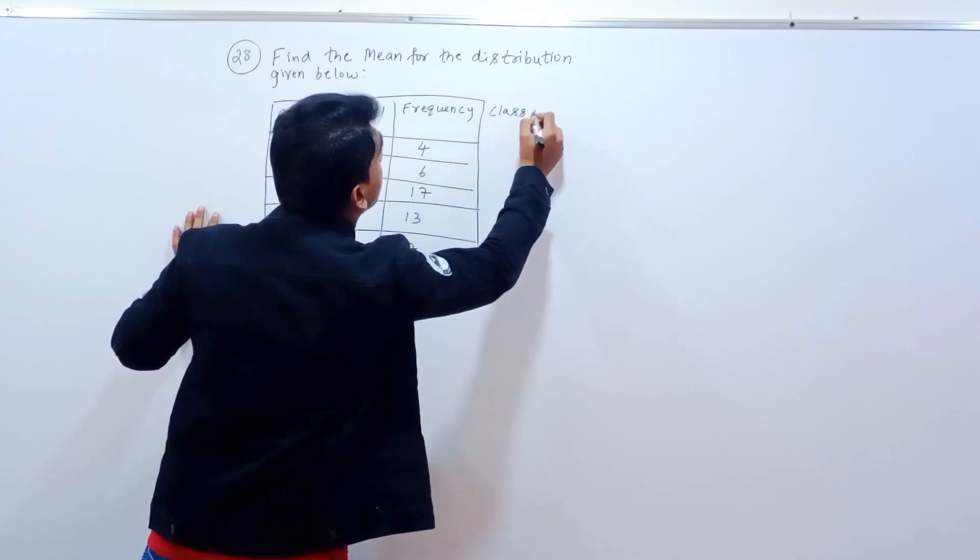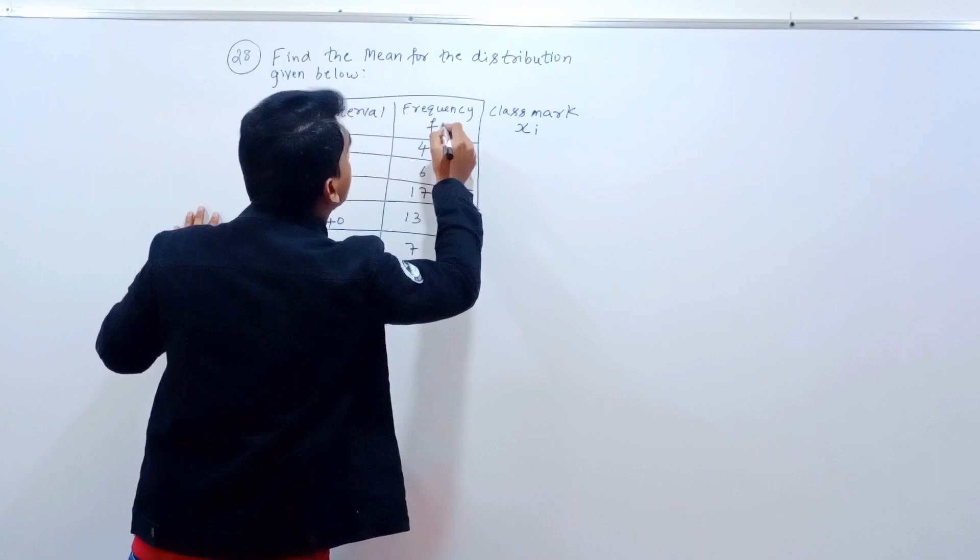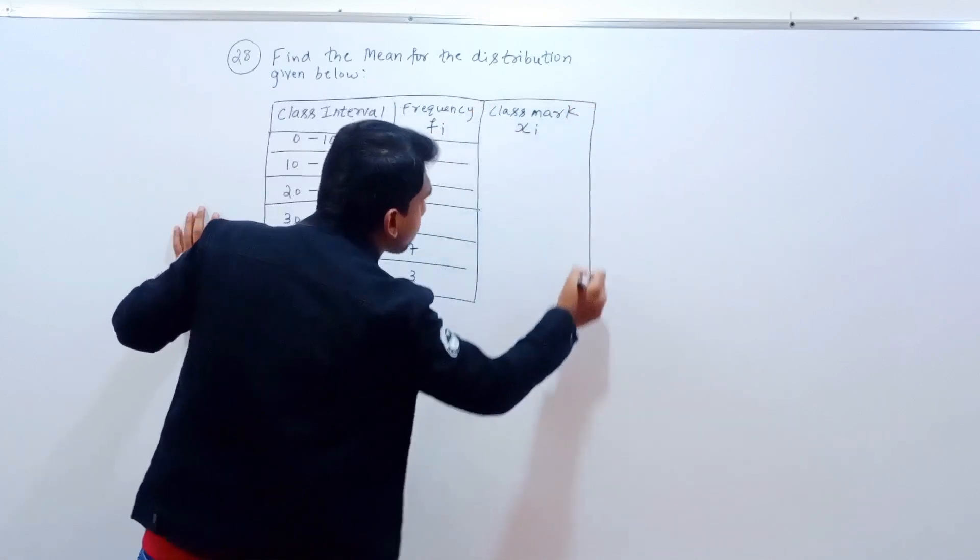First step, I have to find the class mark. Class mark is xi, frequency is fi.